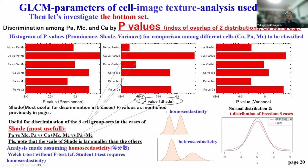From the P-value as an index of overlap of the distributions — for example, CA versus MC — the shade parameter, prominence, and variance are compared. Among these three GLCM parameters, shade can be seen to be very small in the case of PA versus MC. Shade is most useful for PA versus MC, PA versus CA plus MC mixture, and MC versus PA plus MC. From this analysis, the most useful P-value can be obtained from the GLCM parameter shade.